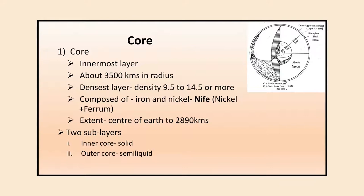The core is the innermost layer of the Earth, with a radius of about 3500 kilometers. It is the densest layer, with density ranging from 9.5 to 14.5 or more. It is composed of iron and nickel, and therefore it is known as NiFe. It extends from the center of the Earth to 2890 kilometers. There are two sub-layers: the inner core, which is solid, and the outer core, which is semi-liquid.